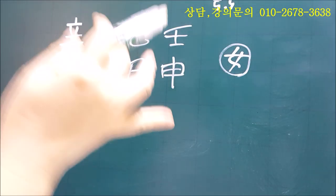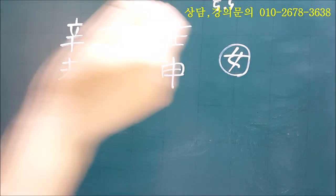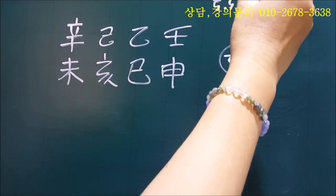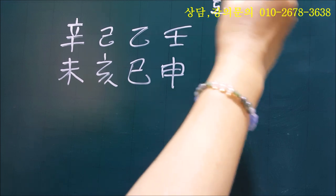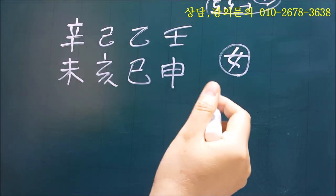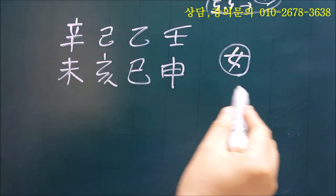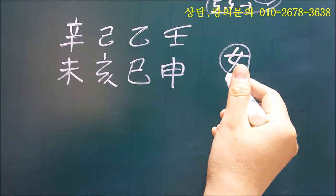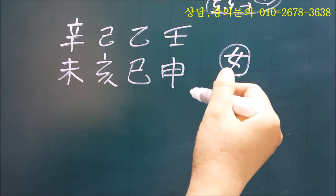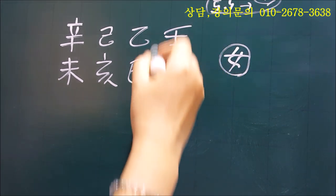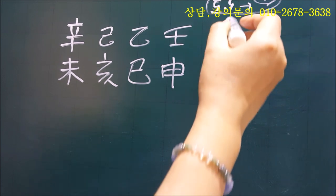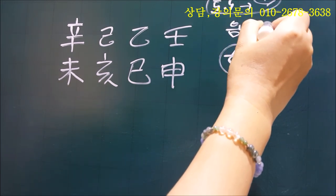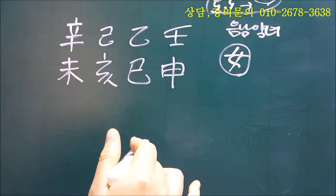개인정보이기 때문에 물론 허락을 받아서 올리는 부분이긴 합니다만 노출될 염려가 있어서 이 부분은 조금 말을 아낄게요. 그냥 5월 5일에서 17일 뒤에 태어나신 분이신데 이 절기로 봤을 때 사주 기초공부를 하신 분들은 무슨 뜻인지 이해가 되실 거예요. 이 분은 임신년생이라서 원숭이띠고 음남양녀로 기준을 삼고 대운 기둥을 세우시면 되세요.